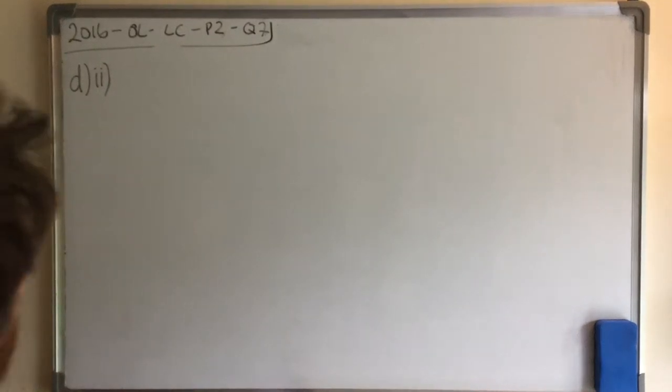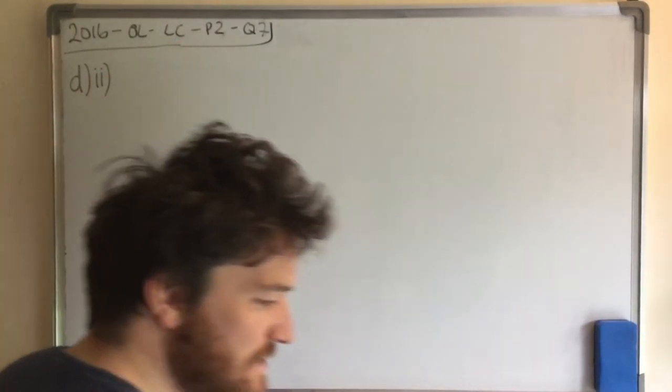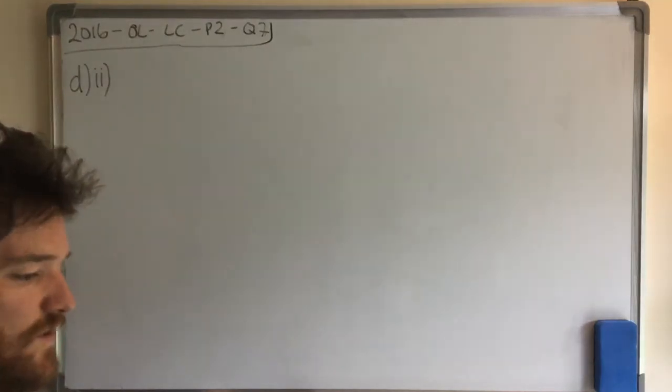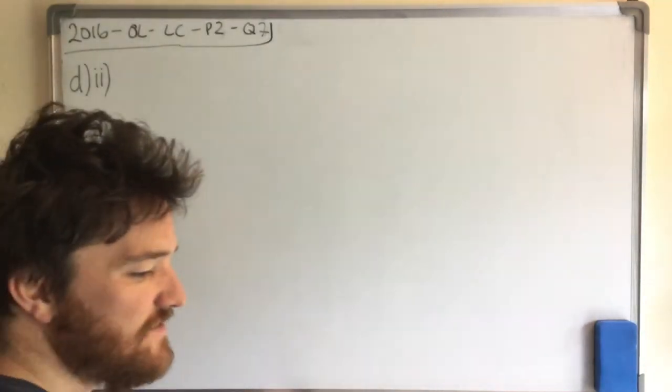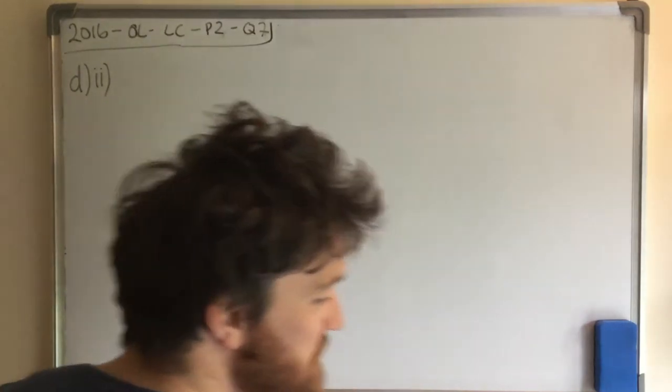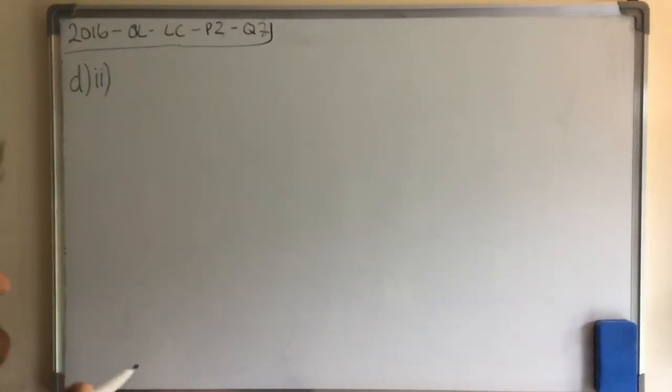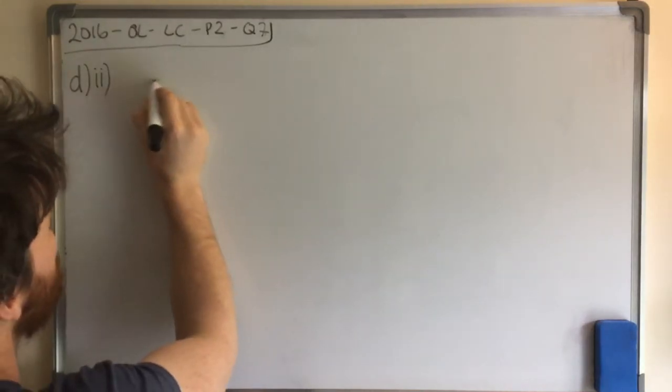Okay, we're looking at 2016 Ordinary Level Leaving Cert Paper 2 Question 7 D Part 2. So they tell us about the other 12 cylindrical pipes connect the outer spheres to each other. Each pipe has a radius of 1.45 and all 12 pipes are equal in length. So just to take comparison to D Part 1, we were talking about different pipes. So don't accidentally mix your two questions together, this is basically a new question.